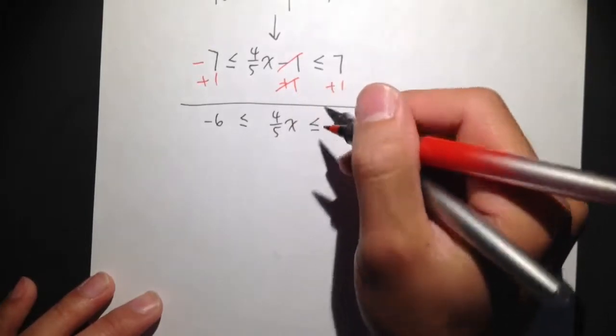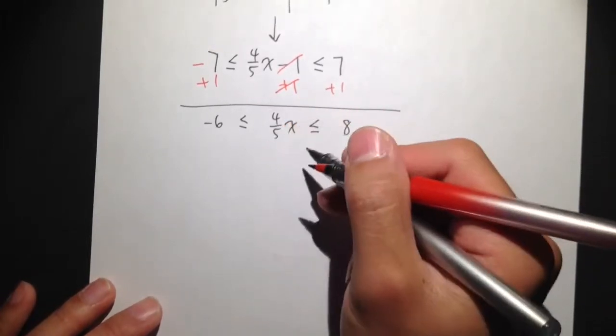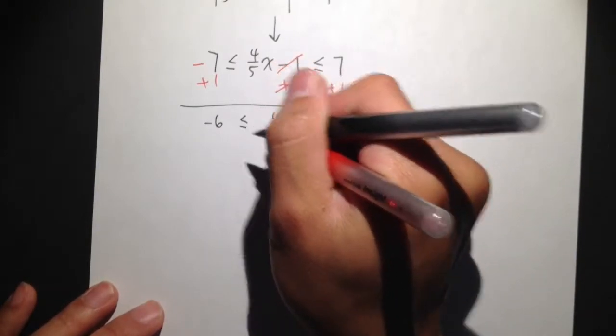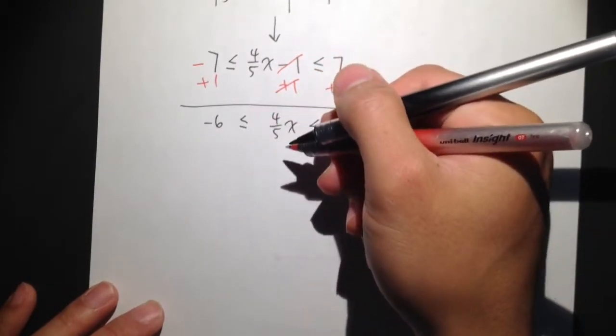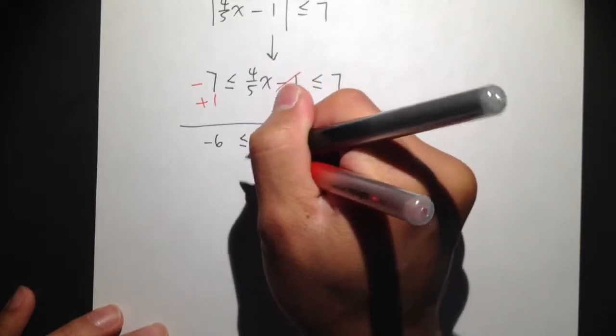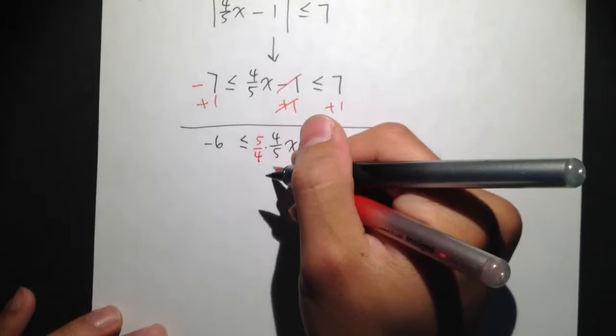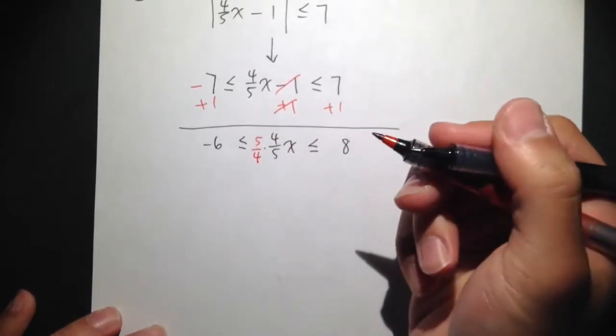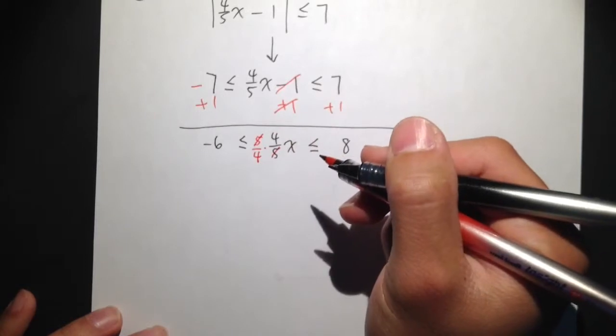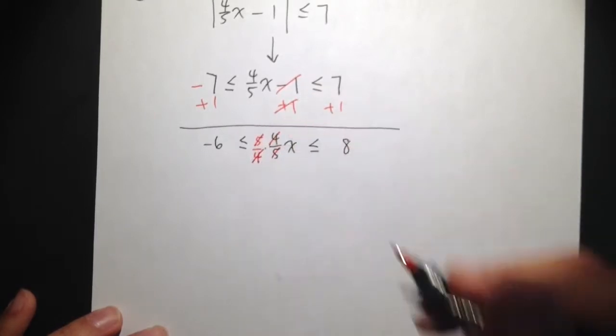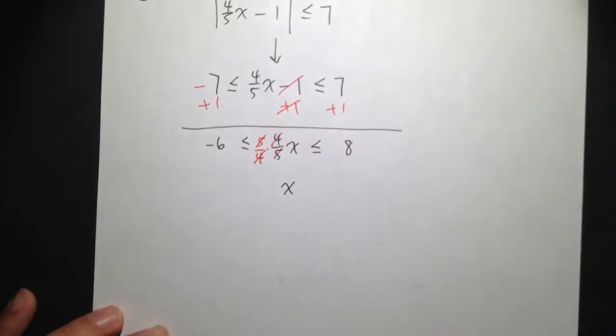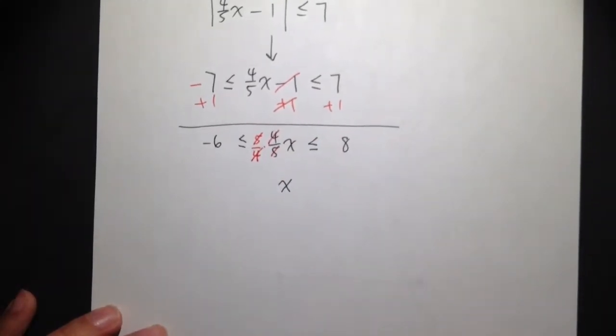So we have here 4 over 5x. So 4 over 5 times x, to isolate the x, what we need to do is multiply by the reciprocal of 4 over 5. In another word, multiply by 5 over 4. And if we multiply by this, the reciprocal, we see that this 5 and that 5 cancels out, and this 4, that 4 cancels out. We will just have an x left by itself in the middle, and that's exactly what we want.